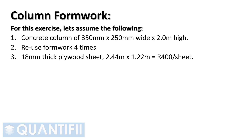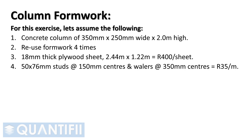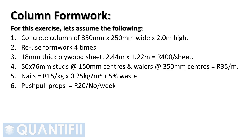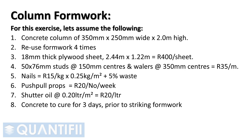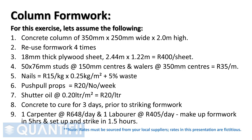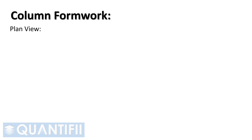18 mm thick plywood sheet, size 2.44 m by 1.22 m, equals 400 Rand per sheet. 50 mm by 76 mm studs at 150 mm centers and whalers at 350 mm centers, equals 35 Rand per meter. Nails at 15 Rand per kilogram, multiplied by 0.25 kg per square meter, plus 5% waste. Push-pull props at 20 Rand per number per week. Shutter oil at 0.20 liters per square meter, equals 20 Rand per liter. Concrete to cure for 3 days prior to striking formwork. One carpenter at 648 Rand per day and one laborer at 405 Rand per day can make up formwork in 5 hours, and set up and strike in 1.5 hours.